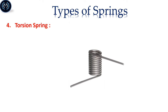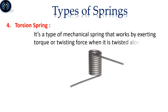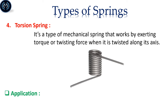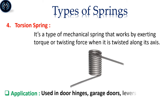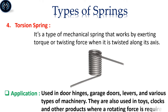Torsion Spring: It's a type of mechanical spring that works by exerting torque or twisting force when it is twisted along its axis. Used in door hinges, garage doors, levers, and various types of machinery. They are also used in toys, clocks, and other products where a rotating force is required.